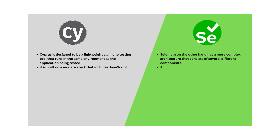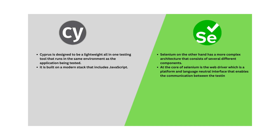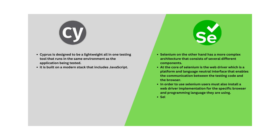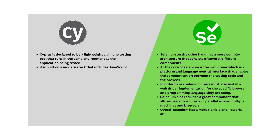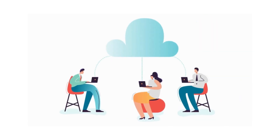Selenium, on the other hand, has a more complex architecture consisting of several different components. At the core of Selenium is the WebDriver, which is a platform and language neutral interface that enables communication between the testing code and the browser. Users must also install a WebDriver implementation for their specific browser and programming language. Selenium also includes a Grid component that allows users to run tests in parallel across multiple machines and browsers. Overall, Selenium has a more flexible and powerful architecture than Cypress, but it may also be more complex and harder to use.